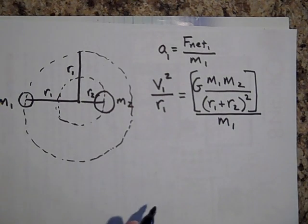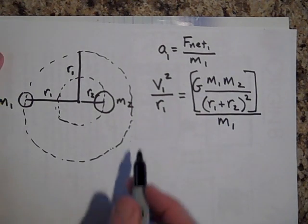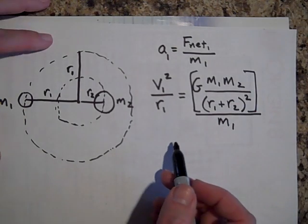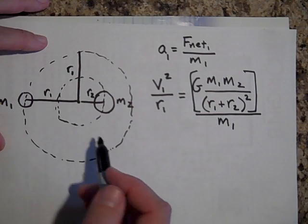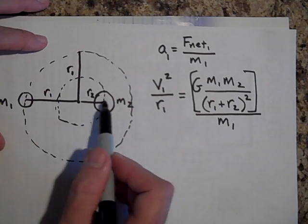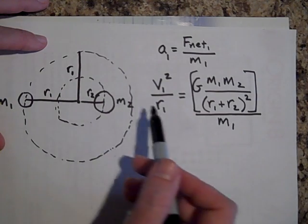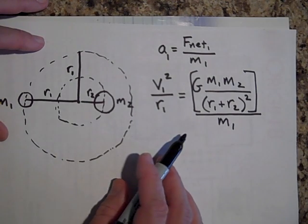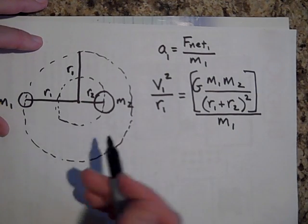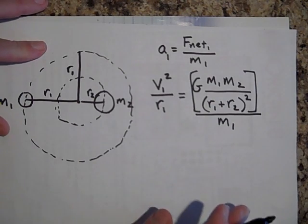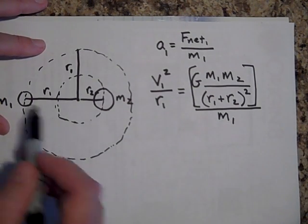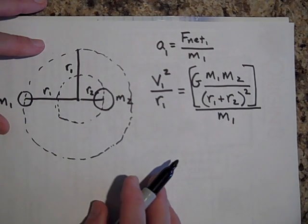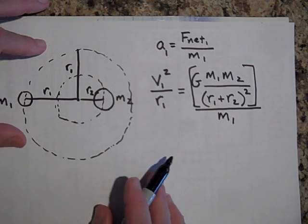So that's how you solve a binary star system. It's actually pretty straightforward. In fact, it becomes much more simple if M1 and M2 have the same mass, then there's some things that you can do that make the problem much more simple. You'll see this, you have a problem, you actually have a problem like that, where the masses are the same. So that means R1 is equal to R2. And it just makes things a little easier.